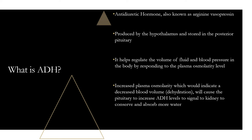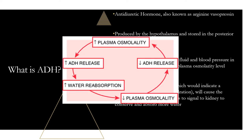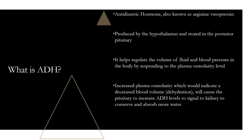Here's a quick diagram: as plasma osmolarity increases, indicating dehydration, ADH production increases, which increases water reabsorption. This leads to decreased plasma osmolality, which then decreases ADH release. We go in this continuous circle, maintaining homeostasis in the body as far as fluid levels.